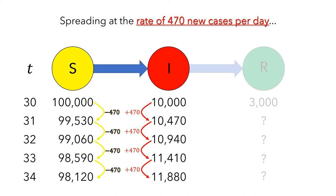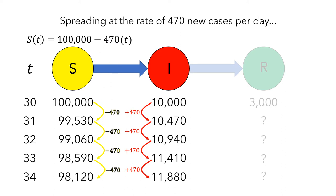We didn't take into account the number of removed people, but that would only affect the number of infected people and not the number of susceptible people. And what if we wanted to express S of t as a formula? We started with 100,000 susceptible people, and the number decreased by 470 for each one-day increase. Since we're starting at day 30, we'd need to adjust this from t to t minus 30.